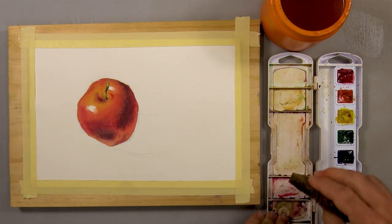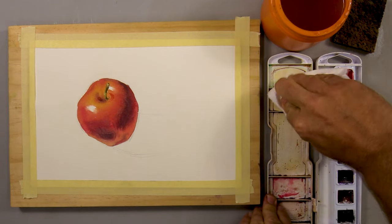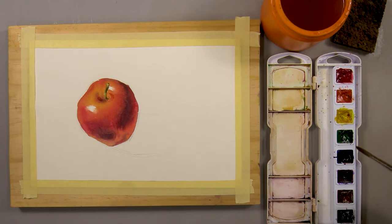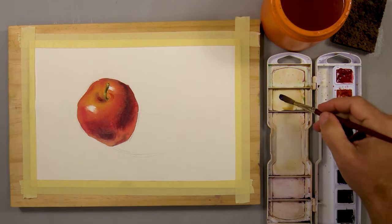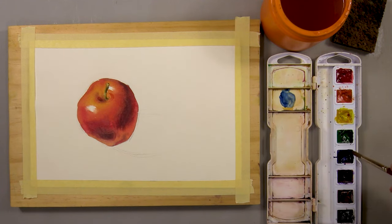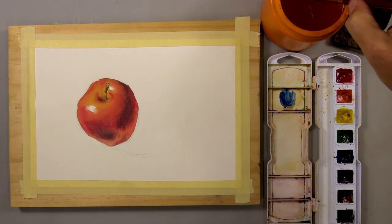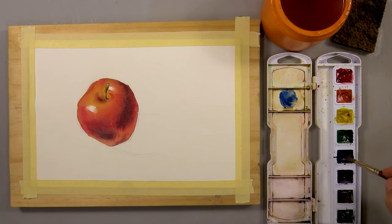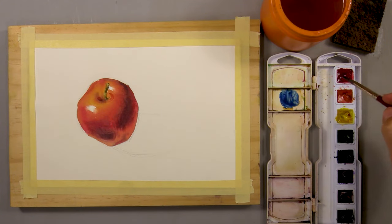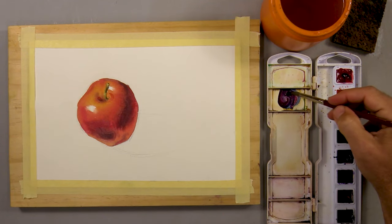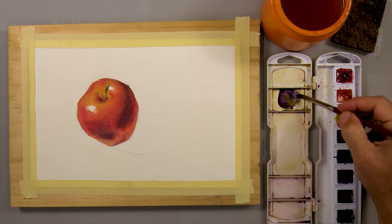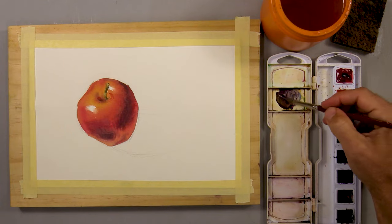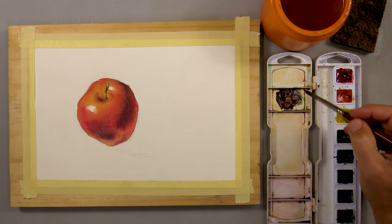Now it's time to paint the cast shadow. I'm using two colors for the cast shadow. They're both neutral tones. One is darker, one is lighter. Both are a mixture of the primary colors. But both have more blue, slightly more blue in the mixture than the other colors. I want them to look like a cool gray.